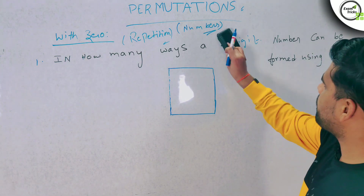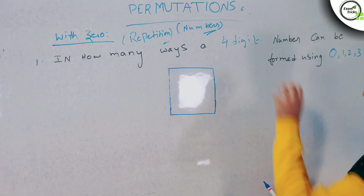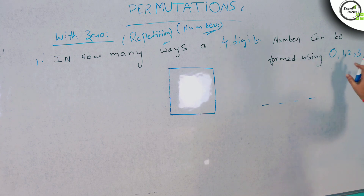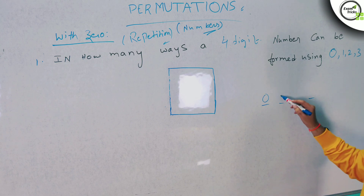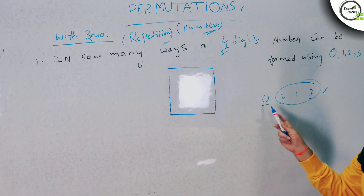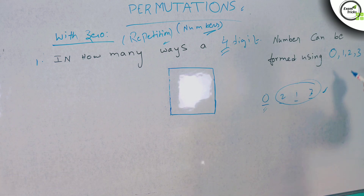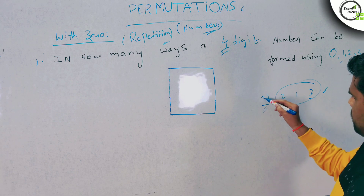First question: in how many ways can a 4-digit number be formed using 0, 1, 2, 3? We have 4 digits and need to form a 4-digit number — that means 4 blanks to fill. If there were no 0, we would simply use NPR. But since 0 is included and 0 cannot occupy the first place in a 4-digit number, we handle it separately. Without 0 in the first place, you can fill the first position in 3 ways using 1, 2, or 3.